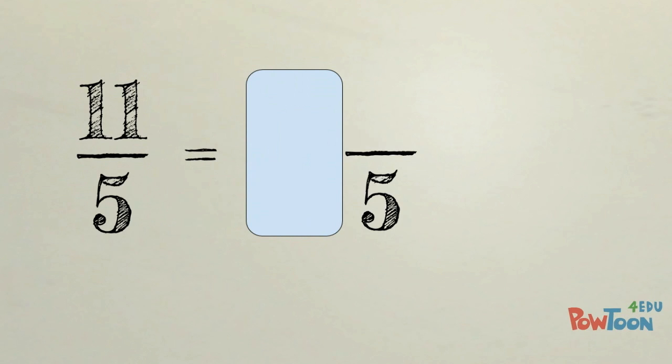It's very important when we do this to keep the denominator the same. We look at that denominator and we use multiples of that denominator in order to find out how many times it goes into the numerator. So 5, 10, and we must stop there because if we go one more it'll be 15.